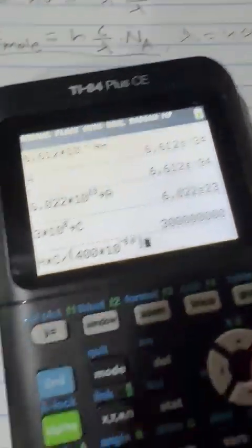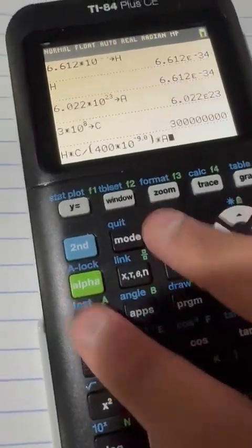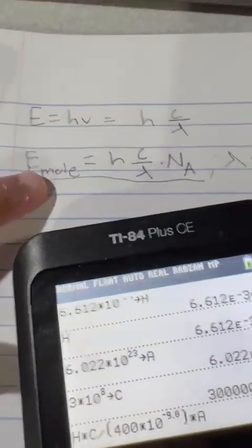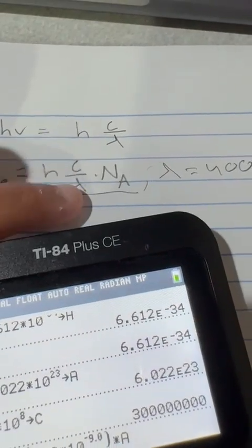Multiplied again by Avogadro's number, or A. And now we have this equation, the energy of a mole. Hc over lambda NA, lambda is 400 nanometers.